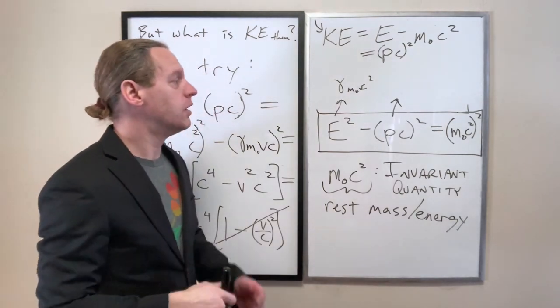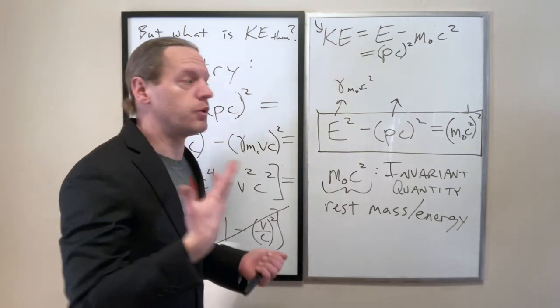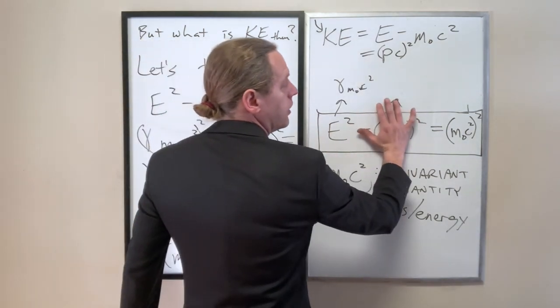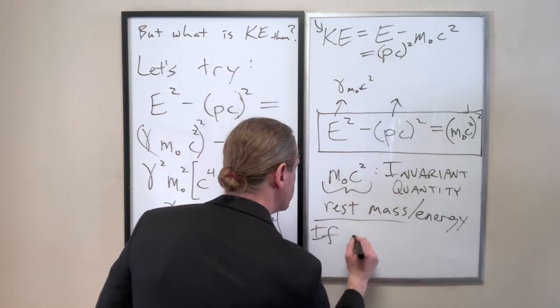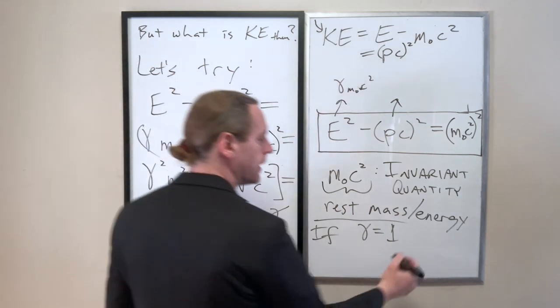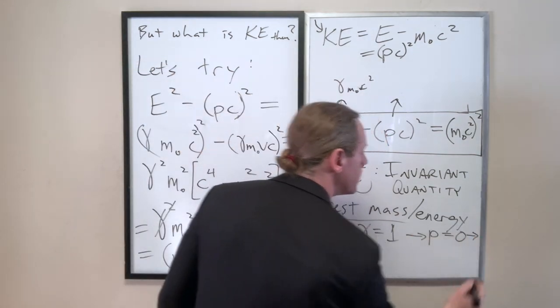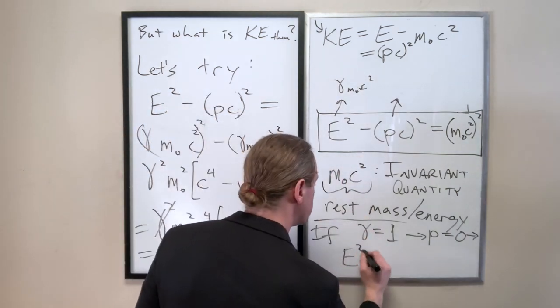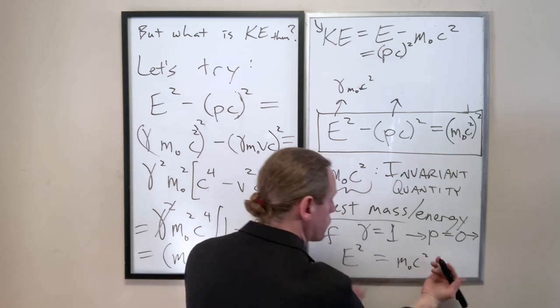Rest mass or rest energy. So even in a rest frame where gamma is equal to 1, meaning that you have no velocity, no kinetic energy, we still have an E. If gamma equals 1, that means that P equals 0. And that means that E squared equals M naught C squared squared.